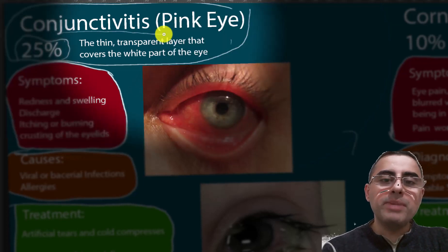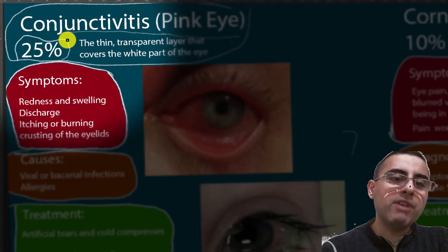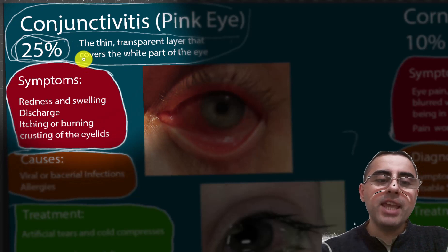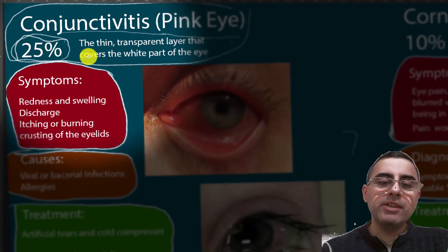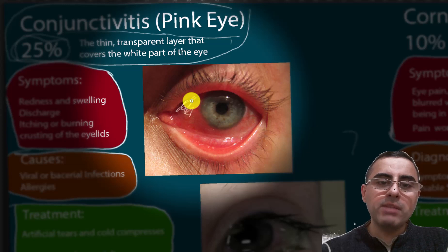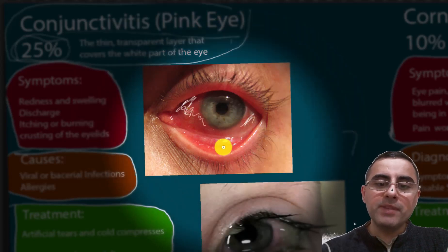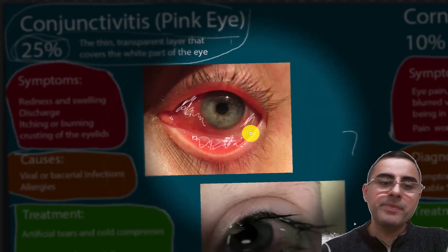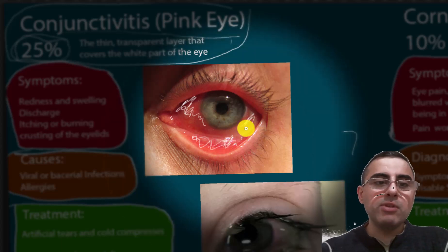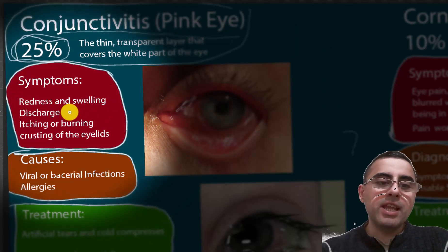Conjunctivitis accounts for around 25% of eye pain cases. The conjunctiva is a thin transparent layer that covers the white part of the eye and eyelids. This part here is the conjunctiva. The most common symptoms of conjunctivitis are redness and swelling.